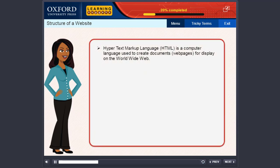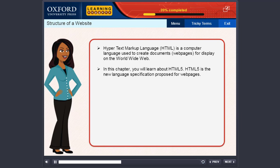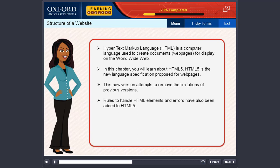Hypertext markup language HTML is a computer language used to create documents, technically called web pages, for display on the world wide web. In this chapter, you will learn about HTML5. HTML5 is the new language specification proposed for web pages. This new version attempts to remove the limitations of previous versions.